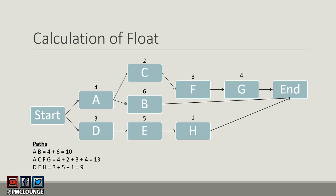We already know what float is and have seen this network diagram in our critical path video. We found three paths: AB, ACFG, and DEH. We added their durations and calculated the total for all three paths.